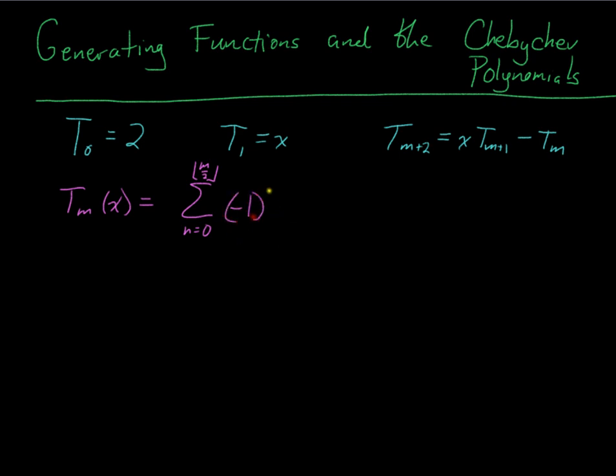It's going to be that Tₙ(x) is sum from n equals 0 to floor of n/2, negative 1 to the n, (m over n-n) choose n, and x to the m-2n.